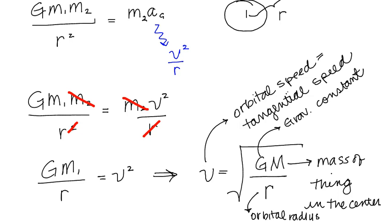So v is the orbital speed, which is the same as the tangential speed. G is the gravitational constant. M is the mass of the thing in the center. And r is the orbital radius.